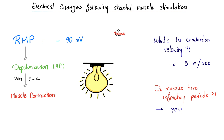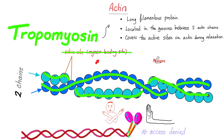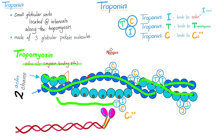Which happens first — the electricity or the light? The electricity has to pass first, then the light bulb will emit light. Similarly, your muscle has to have electricity first — action potential — followed by muscle contraction. Here is the story of actin: tropomyosin is hiding the active sites of actin. Here are the three troponins: troponin T, troponin C, troponin I.